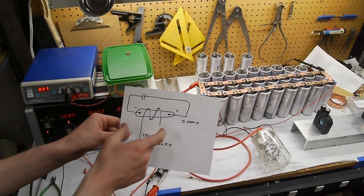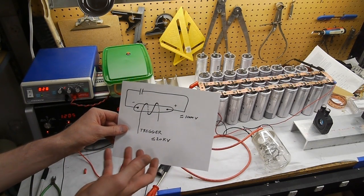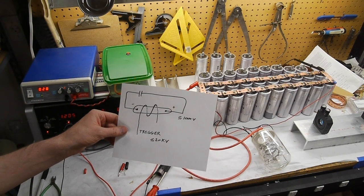The trick is that if your flash tube is very long you need a very high triggering voltage to ionize all of that gas in there.